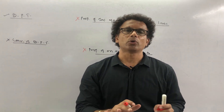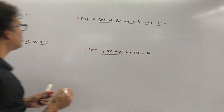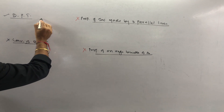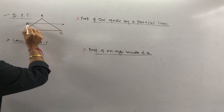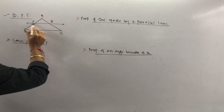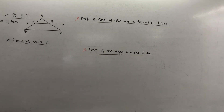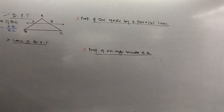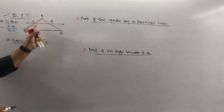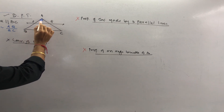It is a very easy property. A line is drawn parallel to one side of a triangle and intersects the other two sides in two distinct points, and the other sides are divided in the same ratio by it. That is, if your triangle has a line PQ parallel to the base, then AP upon PB is equal to AQ upon QC. It is very important. When these two are parallel, you must start from A — that is, AP upon PB is equal to AQ upon QC.